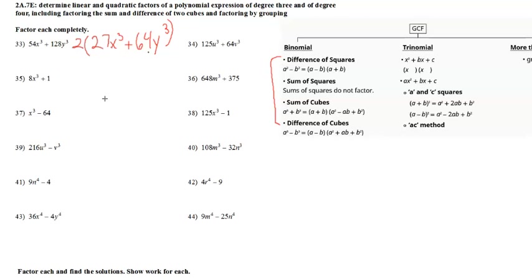We have a sum of cubes, so we're going to use the sum of cubes formula. We identify a³ = 27x³ and b³ = 64y³. To get rid of the cubes, we're going to take the cube root of each side — we're going to exponentiate by one-third.